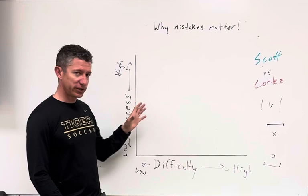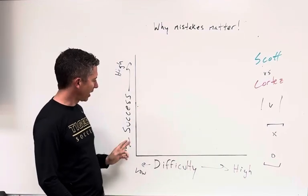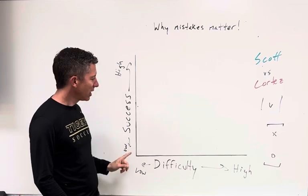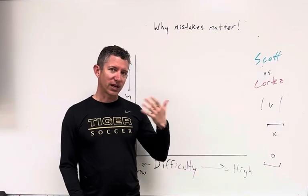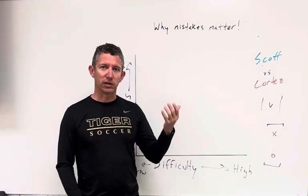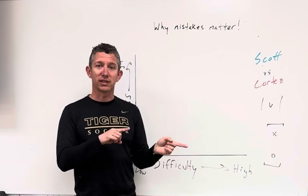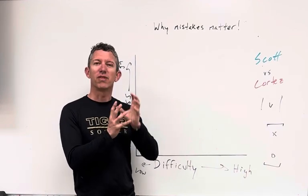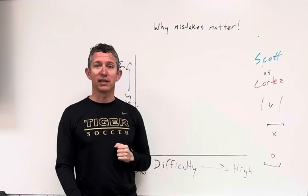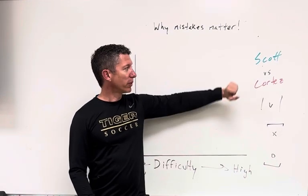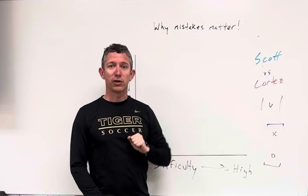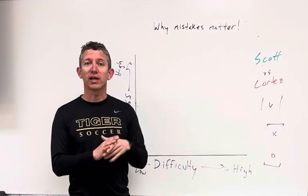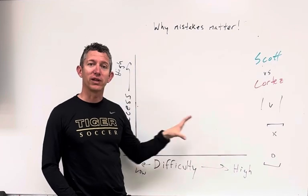So what you see here, you see a little XY graph. We have on our Y axis, we have success, low to high, and we have difficulty, low to high. So I'm going to kind of talk about how the correlation between success and difficulty can help us think about where the right kinds of mistakes lie. And so here we have Coach Scott versus Coach Cortez. We're going to be doing a 1v1 and use that as a framework for how we can think about mistakes.